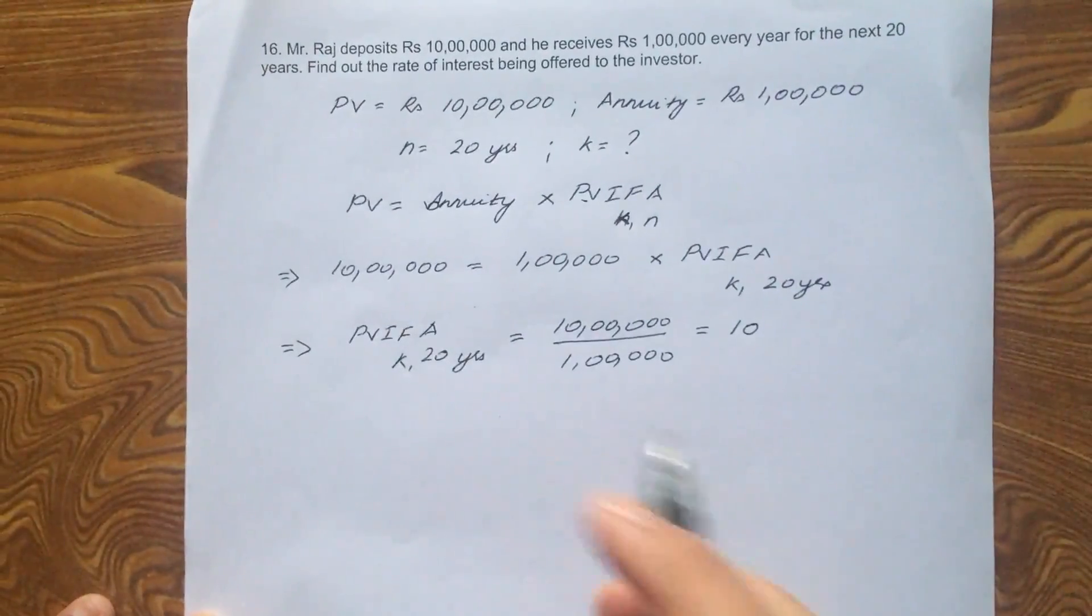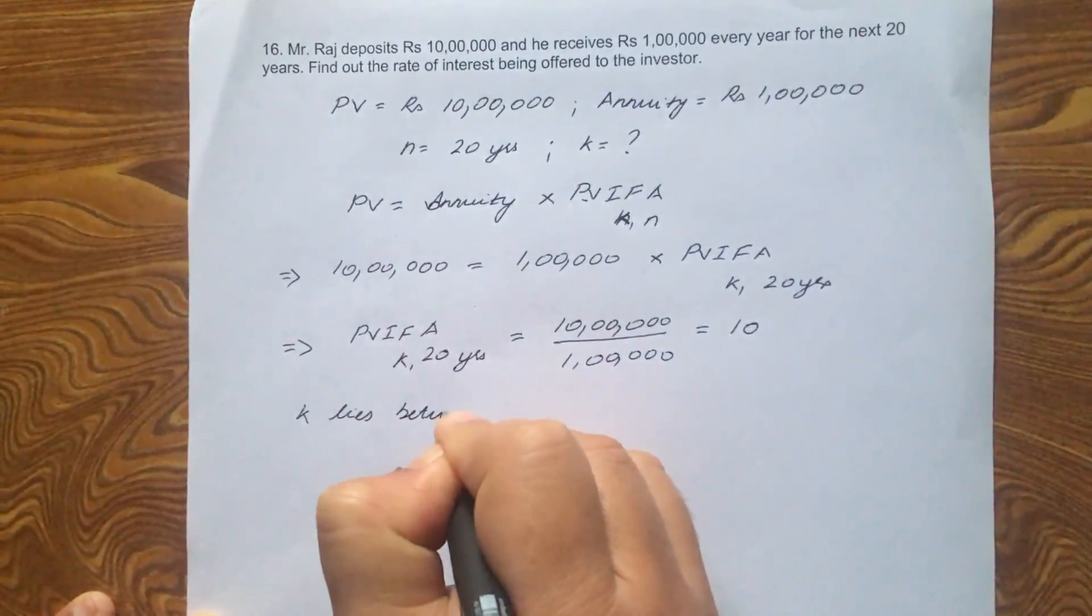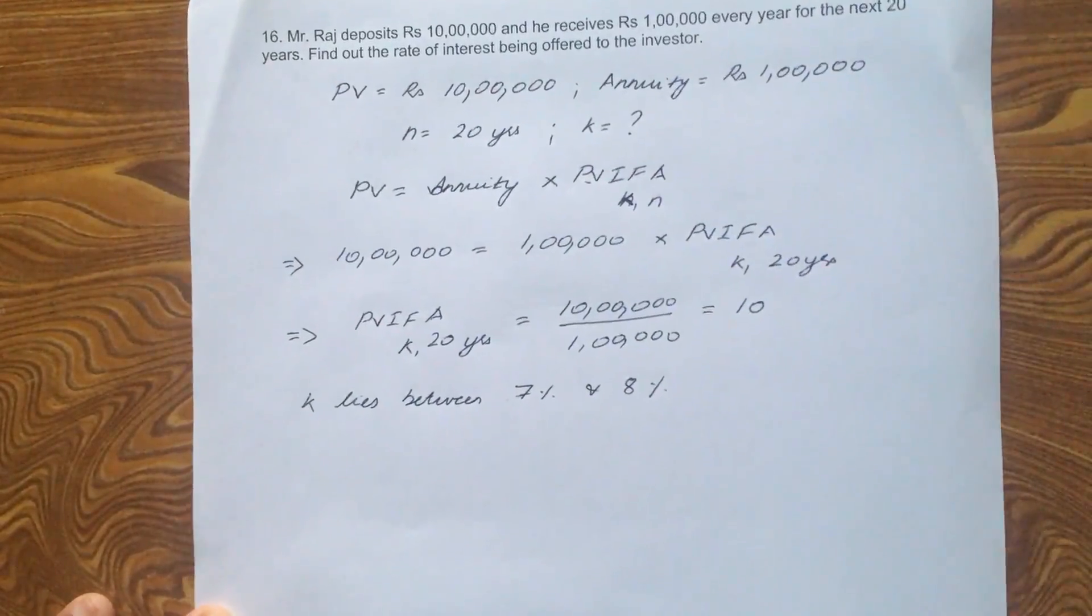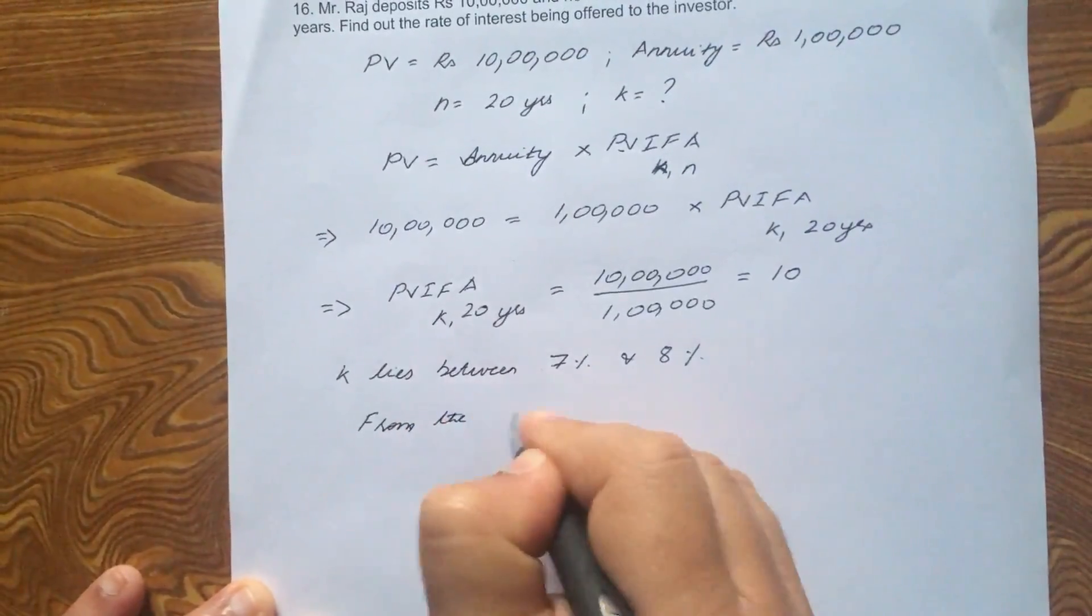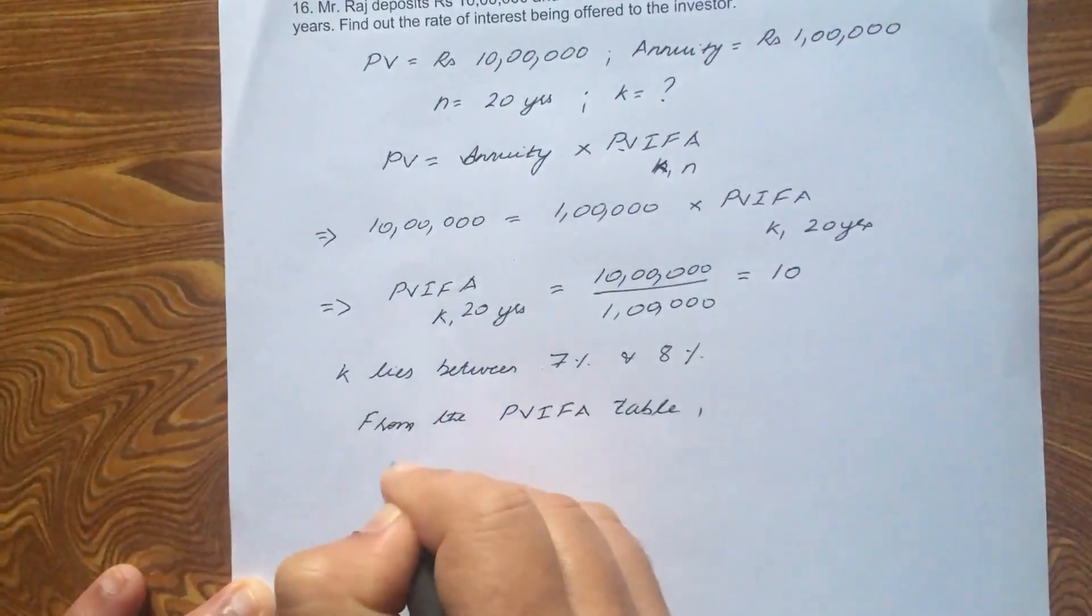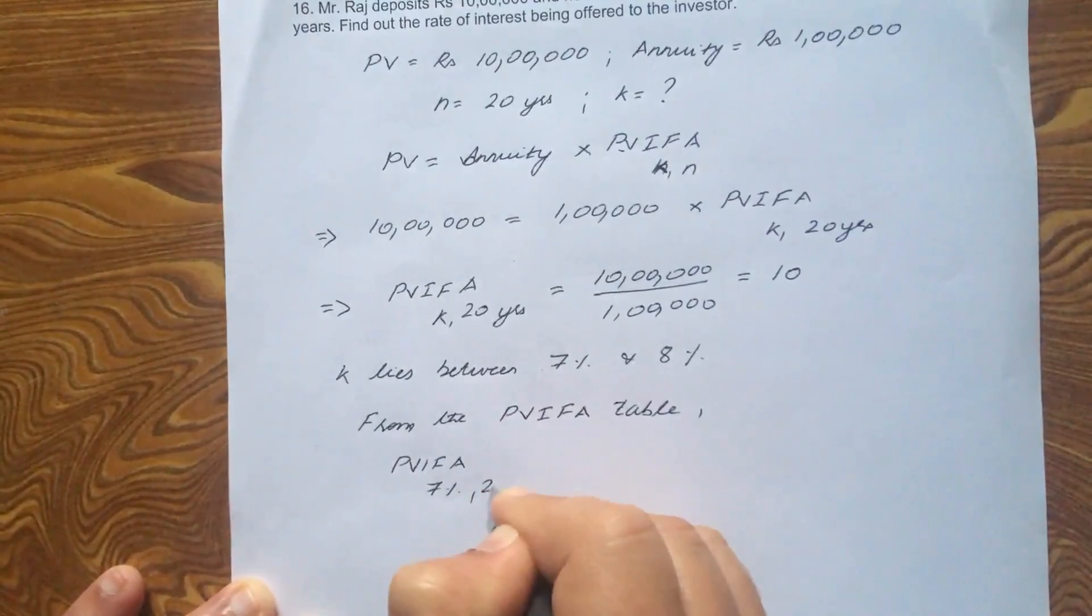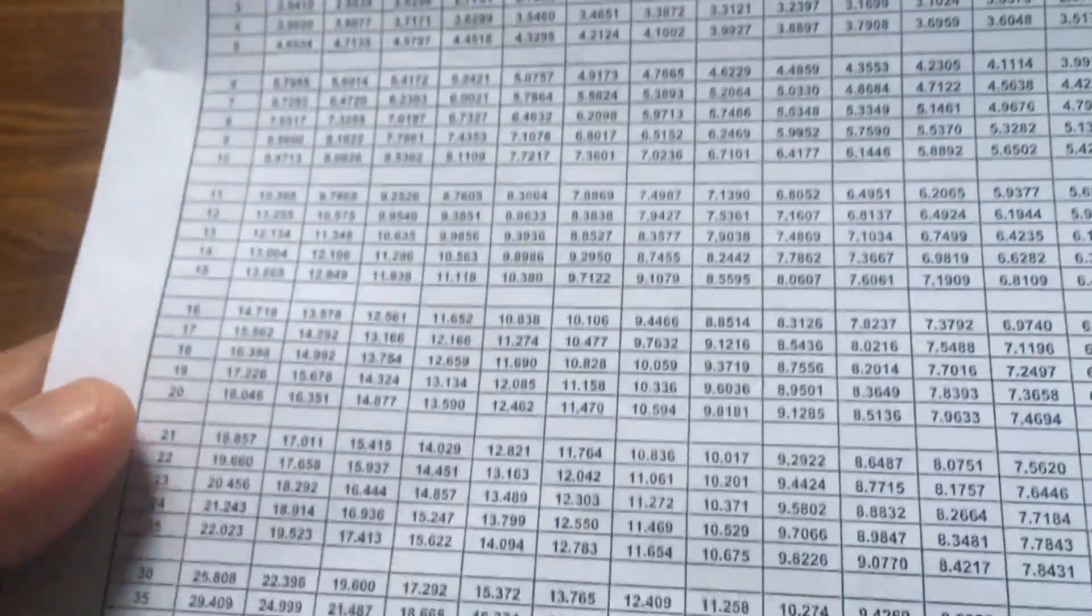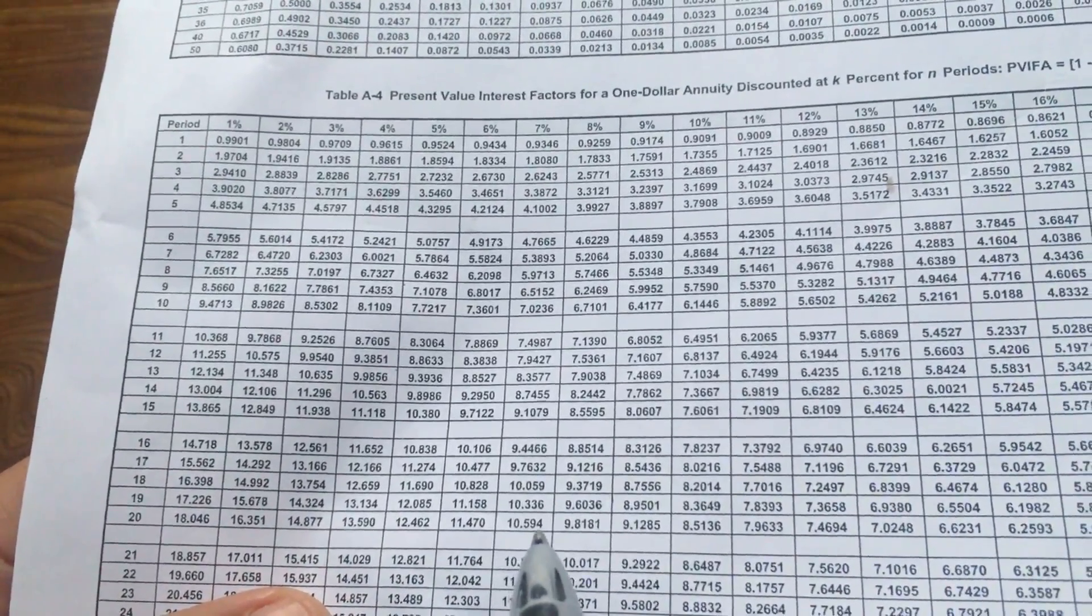So from the PVIFA table, PVIFA 7% 20 years is equal to, what is the rate? 20 years and 7%, it is 10.594.